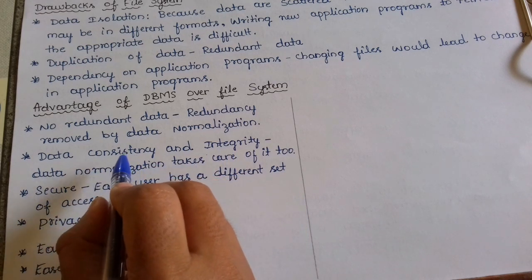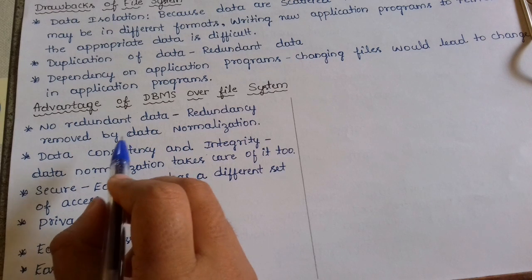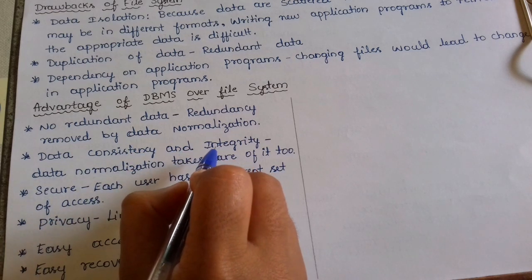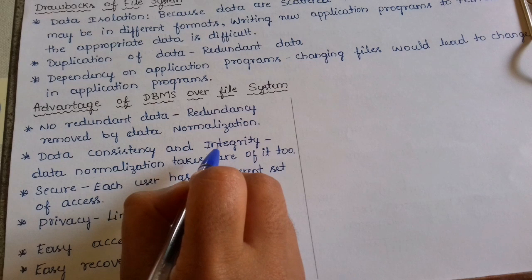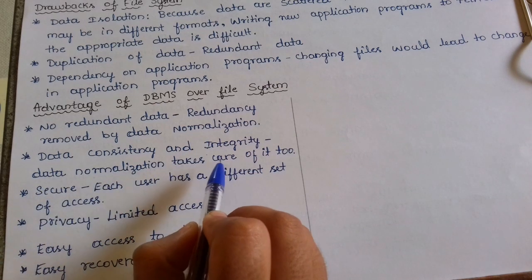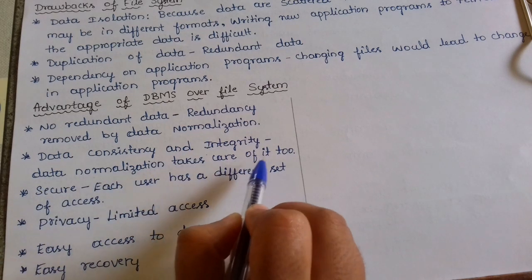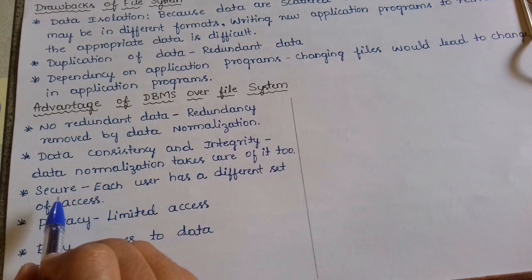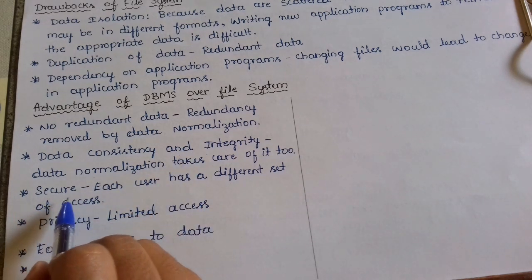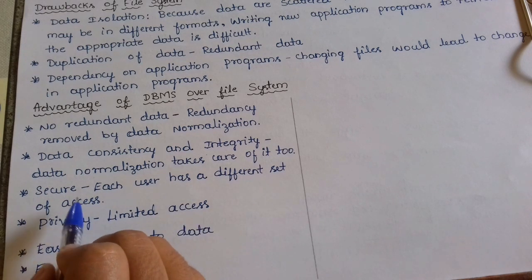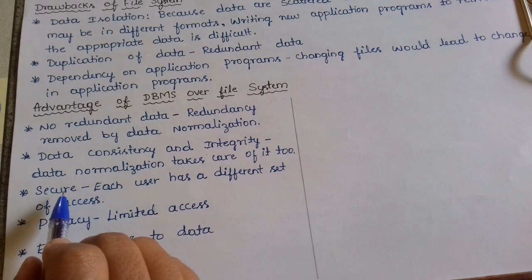Data will be integrated, and data normalization takes care of consistency and integrity as well. The next point is security — each user has a different set of access permissions, so data will be secure.